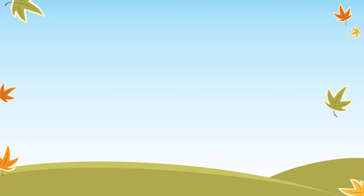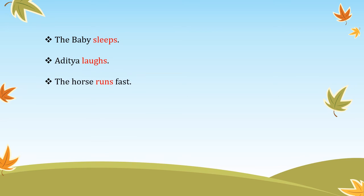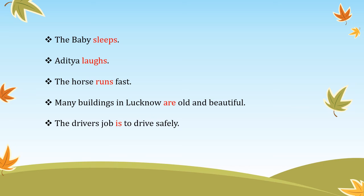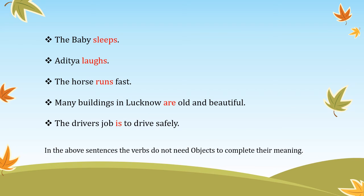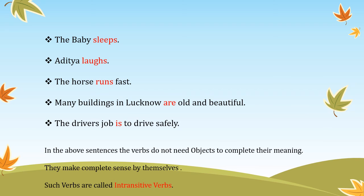Let us understand the concept of intransitive verbs from the following sentences. 'The baby sleeps.' 'Aditya laughs.' 'The horse runs fast.' 'Many buildings in Lucknow are old and beautiful.' 'The driver's job is to drive safely.' In these sentences, the verbs do not need objects to complete their meaning — they make complete sense by themselves. Such verbs are called intransitive verbs.